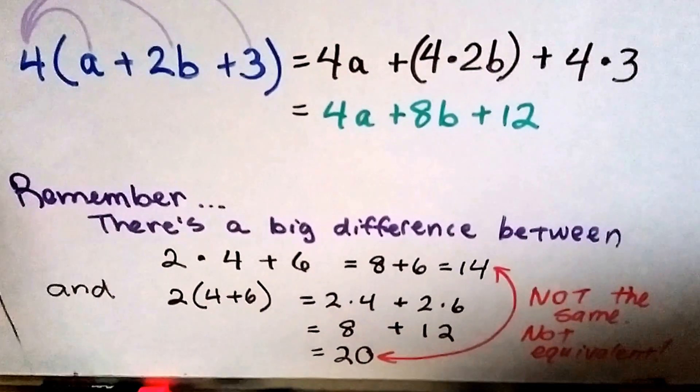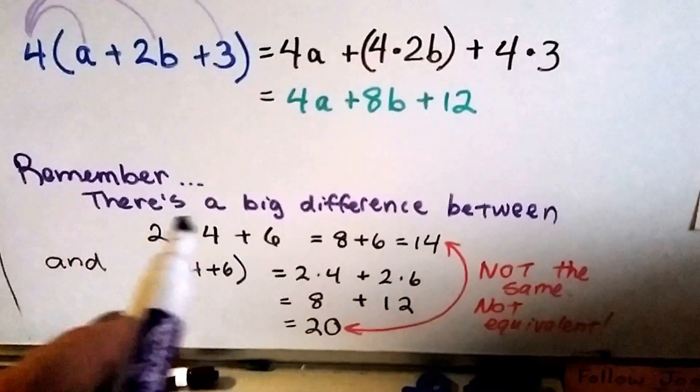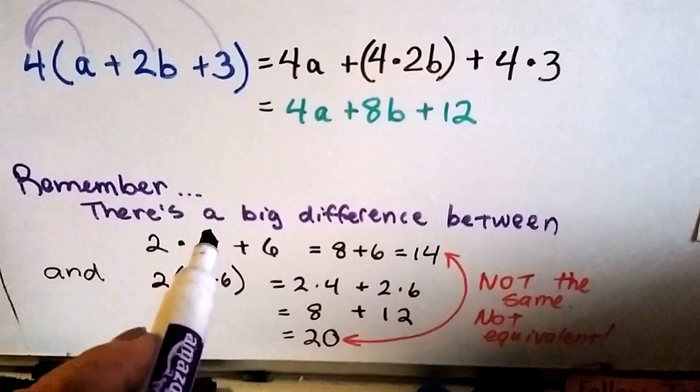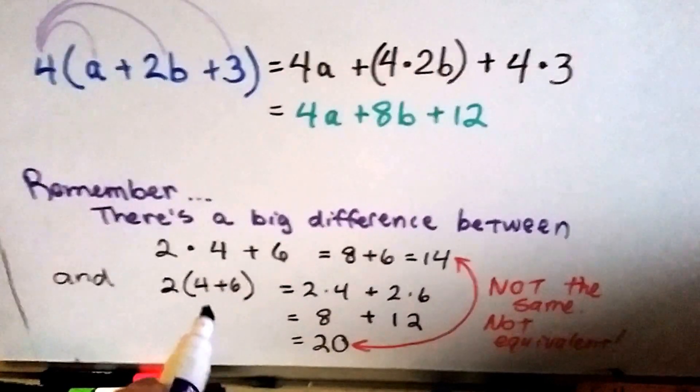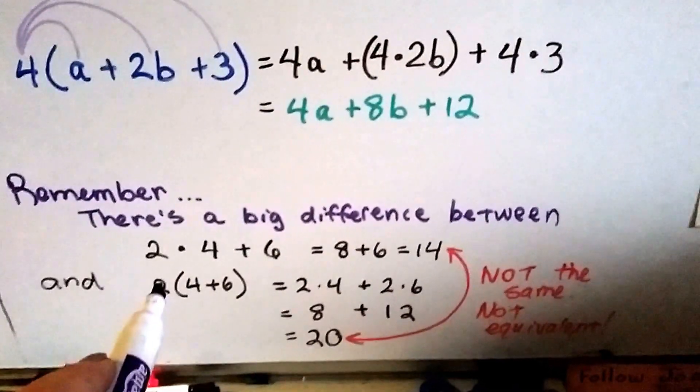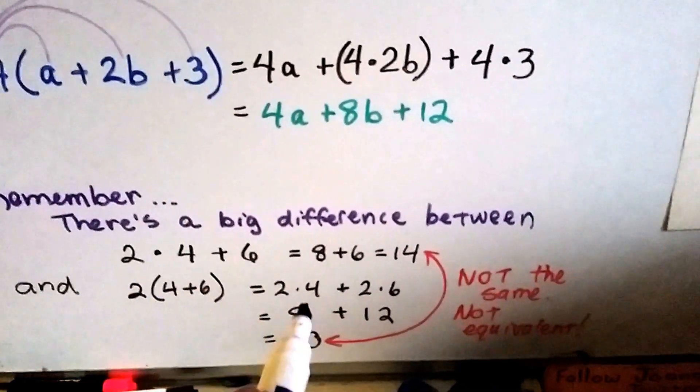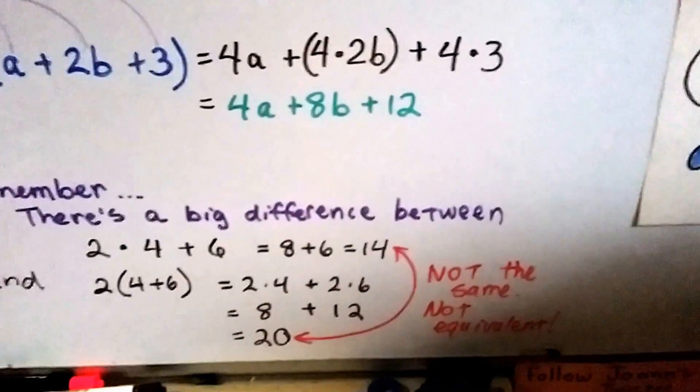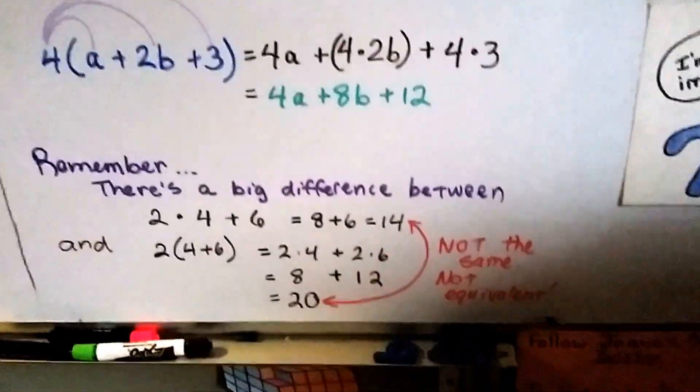So remember, there's a big difference between just multiplying and then adding because that would be 2 times 4 is 8 plus 6 is 14. And if it had parentheses and we distributed, we'd have 2 times 4 plus 2 times 6. That's 8 plus 12. That's 20. They're not the same, are they? They're not equivalent.